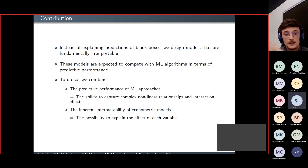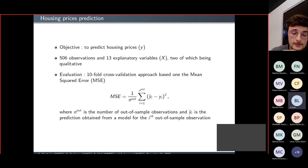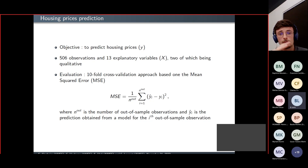To illustrate the advantages of our new models, we focus on the prediction of housing prices. Our dataset has a bit more than 500 observations with several explanatory variables, some of which are qualitative.